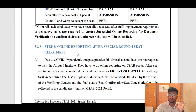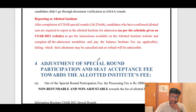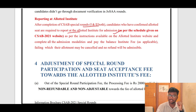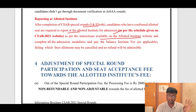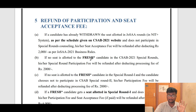After that, step eight is online reporting after special round seat allotment. After completion of special rounds one and two, candidates who have confirmed allotted seats are required to report at the allotted institute for admission as per the schedule given on the CSAB 2021 website. You have to visit the allotted institute's website and complete all the procedures they ask you to follow.